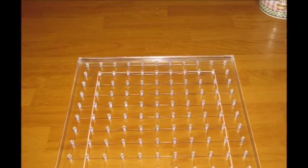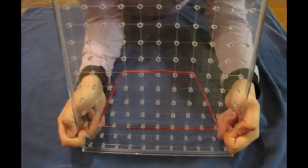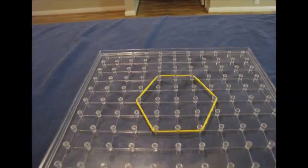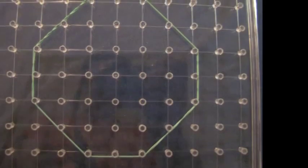This is a big square. These are two rectangles. This is a trapezoid. This is a pentagon. A hexagon. A heptagon. And an octagon.